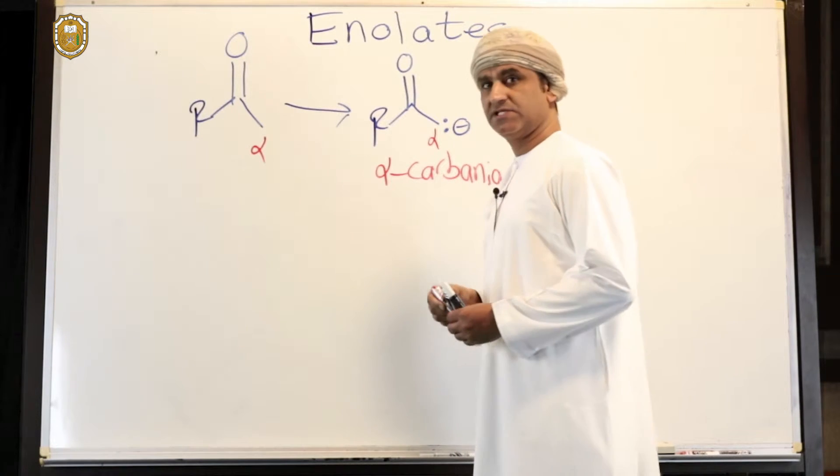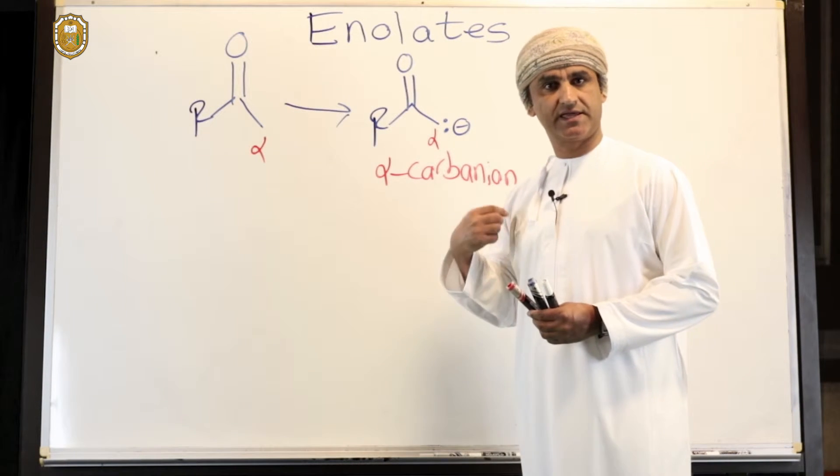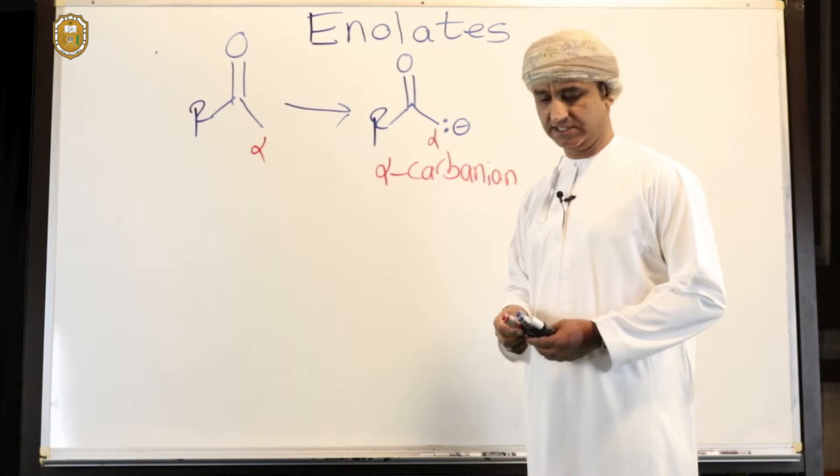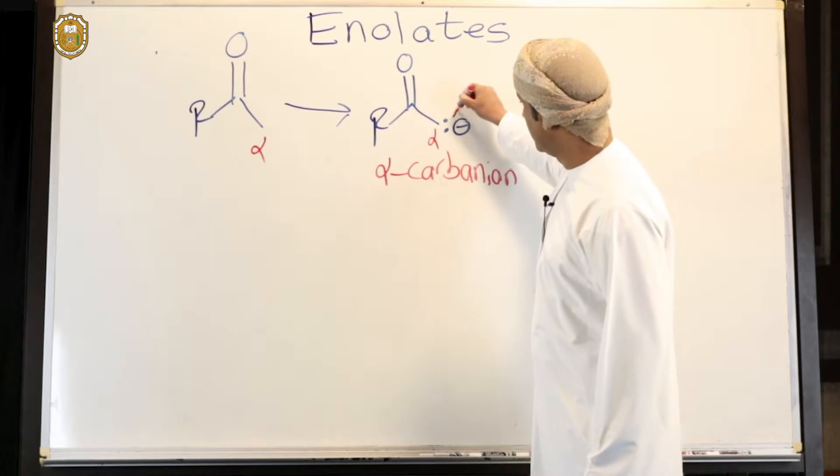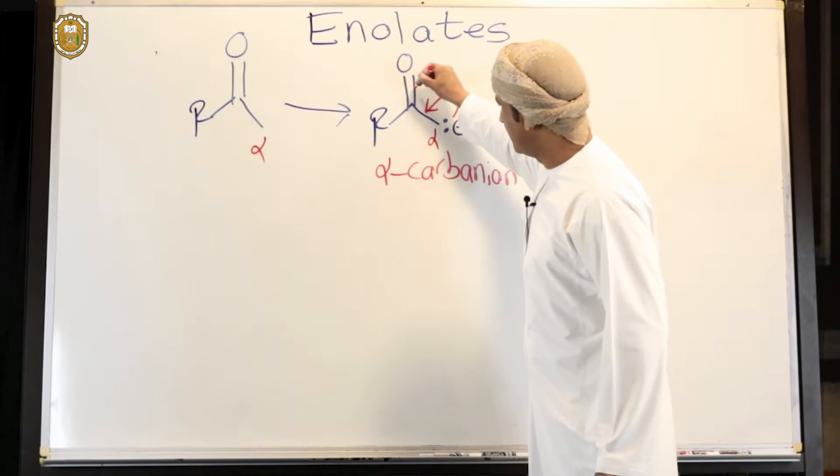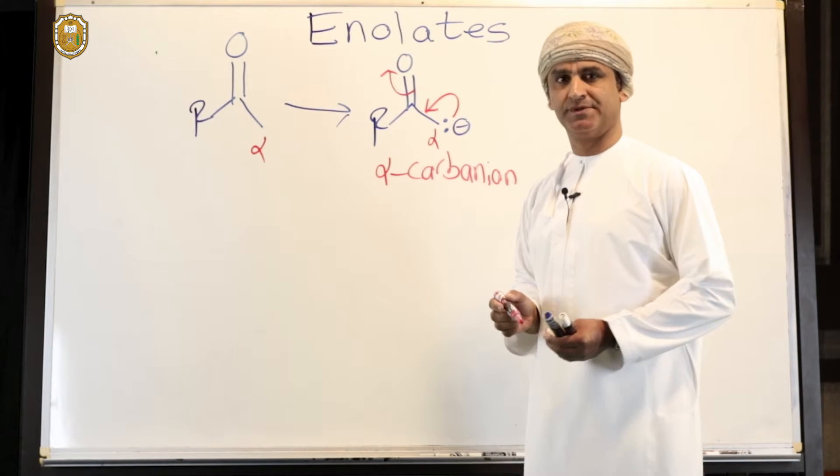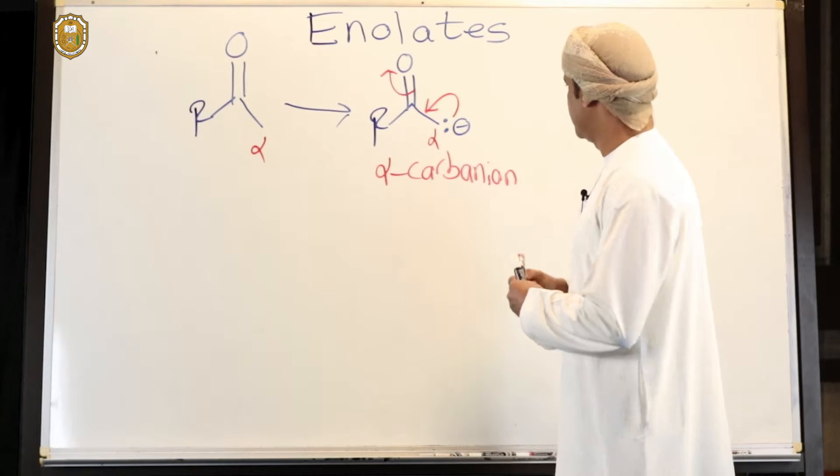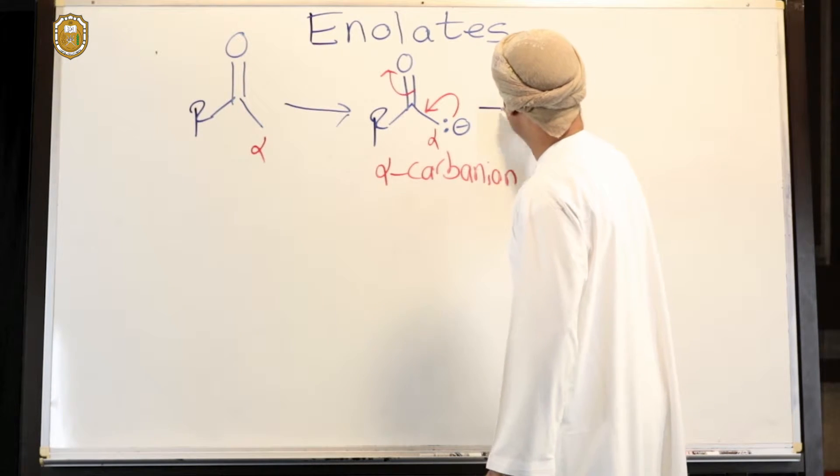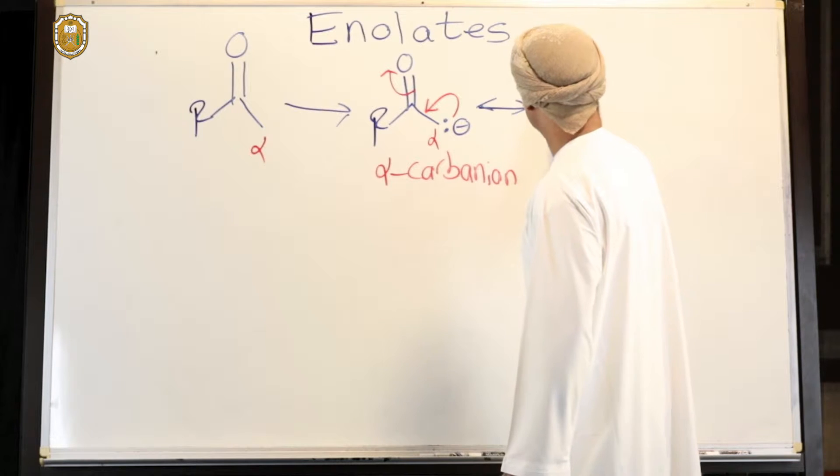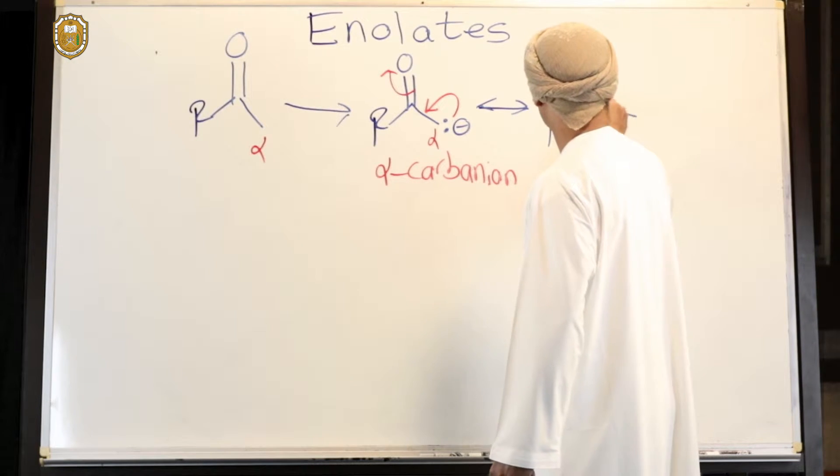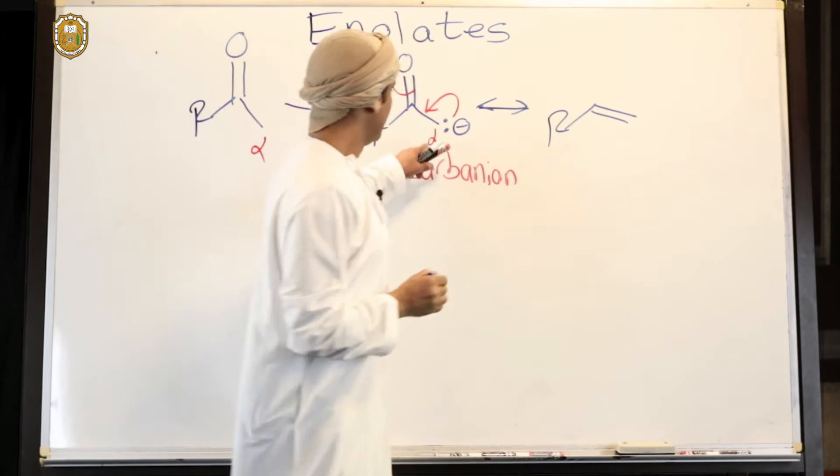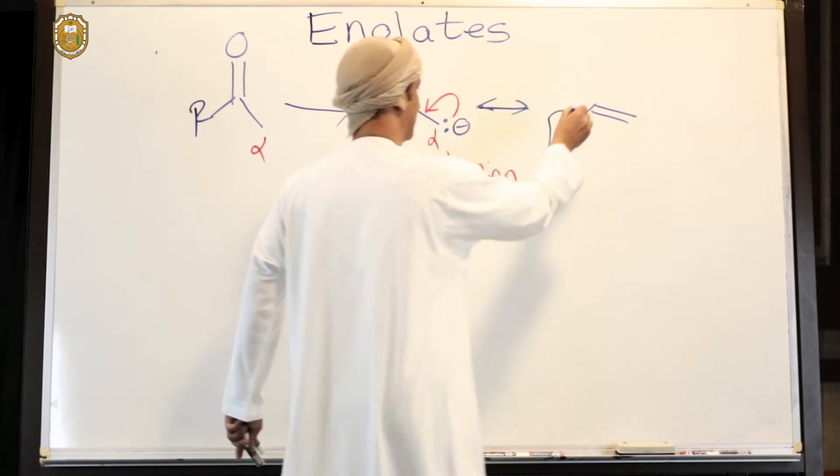What's special with these alpha carbanions is that they can actually be stabilized by resonance. We can take that lone pair, make a double bond here and then break that carbon-oxygen double bond simultaneously. If that's done, which is resonance obviously, then we get another intermediate where there is a double bond between the alpha carbon and the carbon of the carbonyl group.